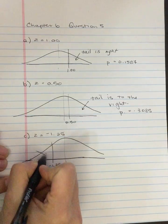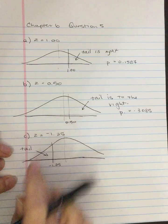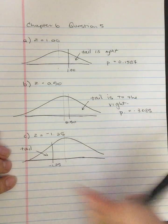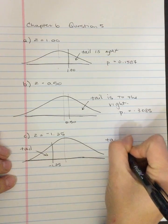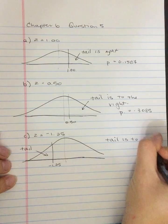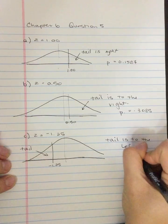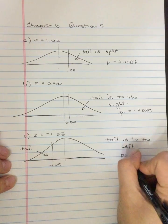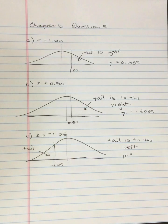So the tail is over here. The tail is always the smaller part, so the tail is here, the body is here. The tail is to the left and the probability there is—I can look this up in the table.